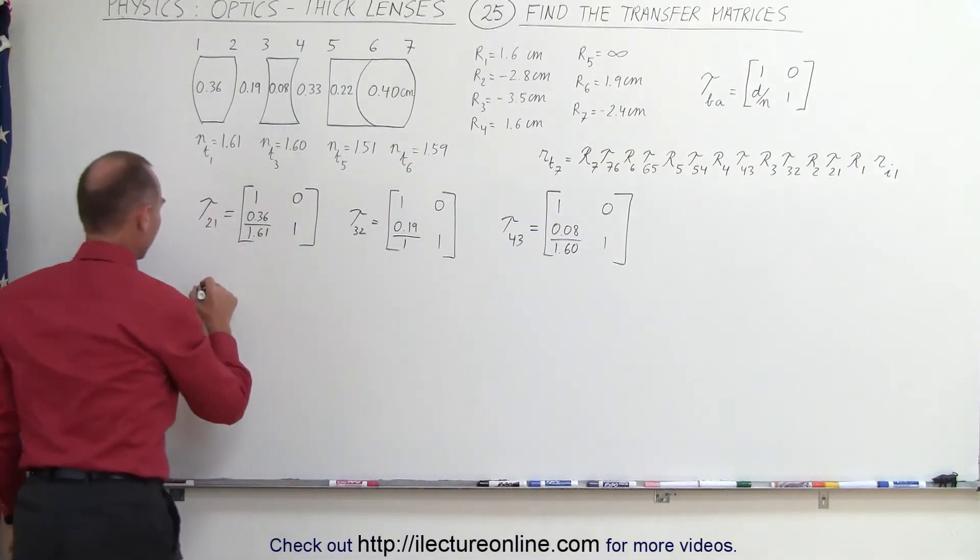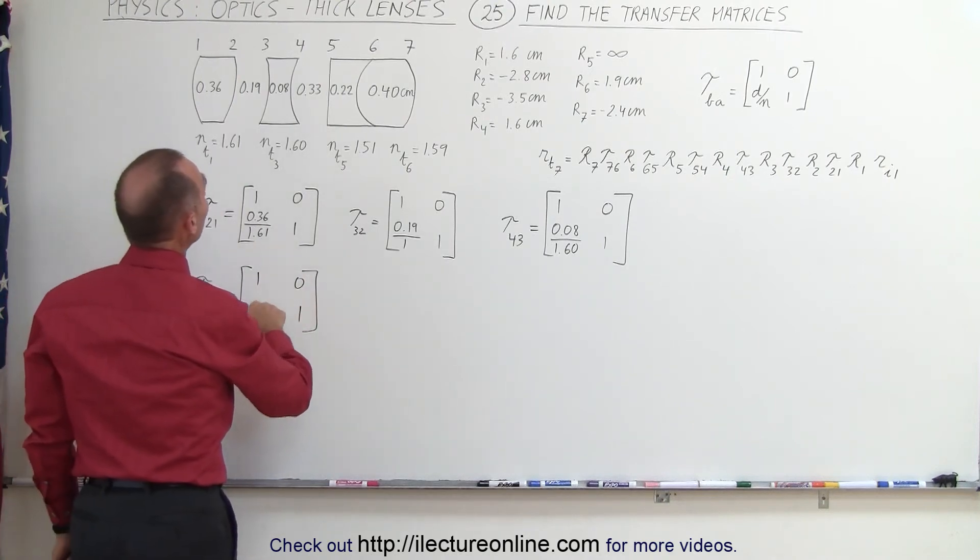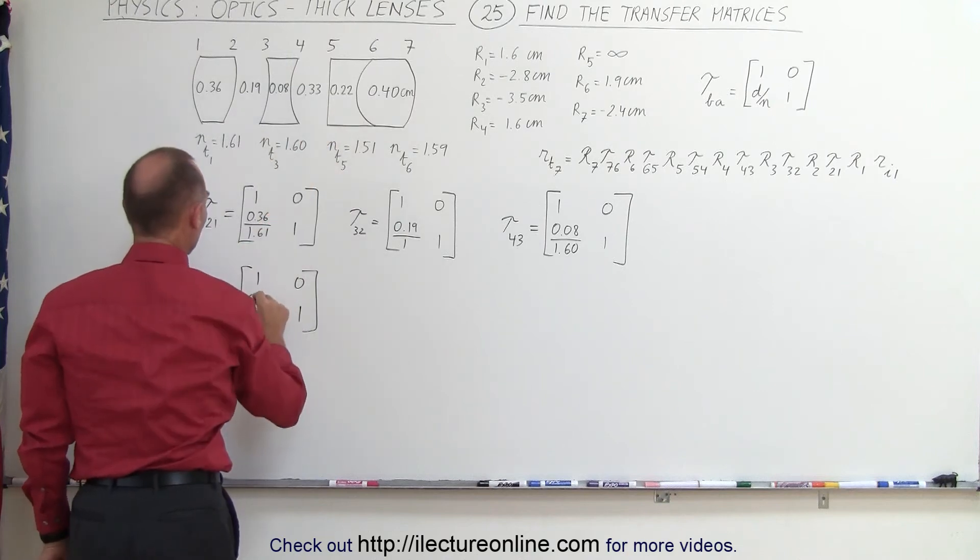Coming over here, we have our fourth transfer matrix. That would be from 5 to 4. Again, 1, 0, 1. D over N, so that would be the air gap again, 0.33, divided by 1.